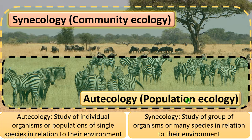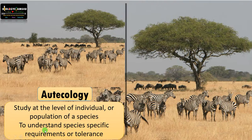Population refers to individuals of the same species residing in the same habitat at a given time. Whereas synecology, or community ecology, is the study of a group of organisms or many species in relation to their environment. Now let us understand the difference between otocology and synecology in detail.